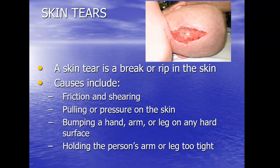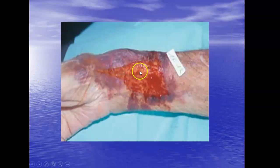We see skin tears from friction and shearing — pulling on a person, causing pressure on the skin, bumping a hand, arm, or leg on a hard surface. Holding a person's arm or leg too tight is another cause. Sometimes CNAs, instead of using their gait belt to help sit or stand someone up, grab them by the arms. If the person starts to slip or fall and you tug on their arm, it can just tear their skin open.